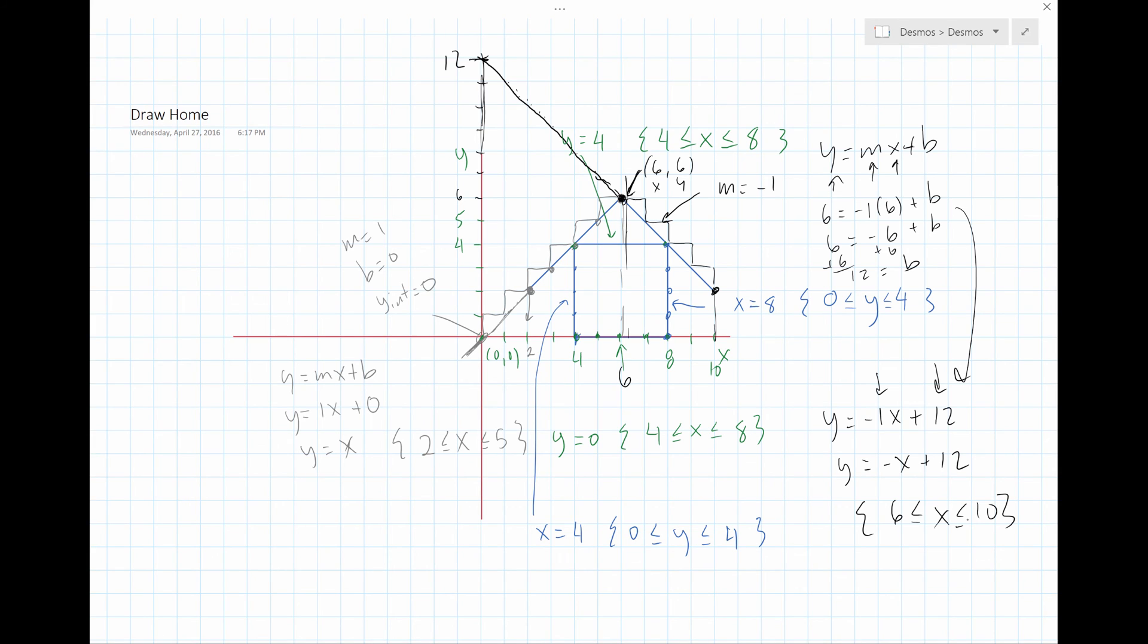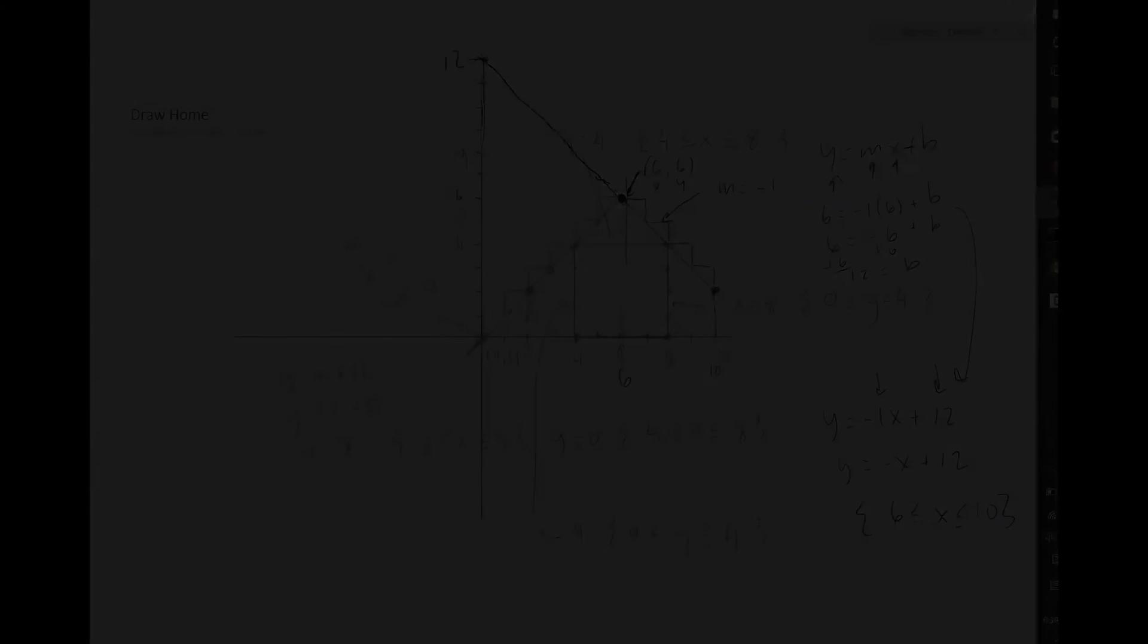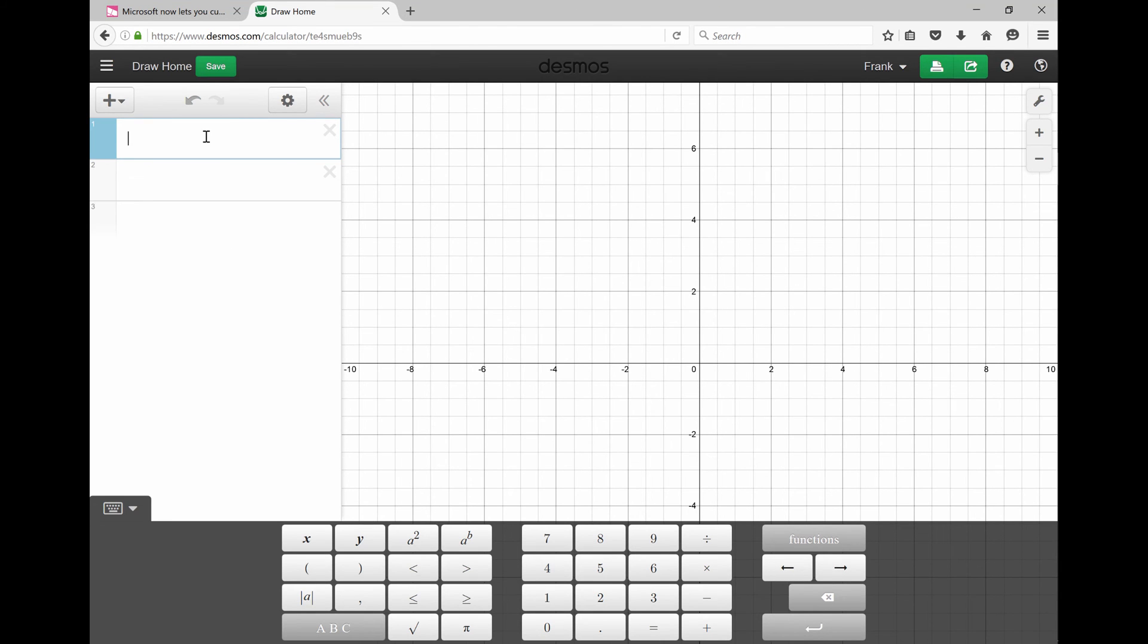Now what we're going to do is we're going to put it inside of Desmos and find out if that works. Okay, so let's see if we can draw the home. We go Y is equal to 0. Then let's do the curly brackets. Okay, let's see, curly brackets. And we go from 4, and then less than or equal to X, less than or equal to 8. And then close the brackets, and there's our line right there.